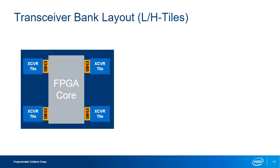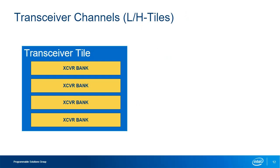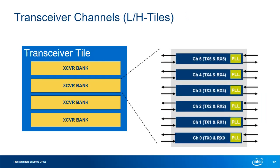Inside each L and H transceiver tile you will find transceiver banks — there are four transceiver banks in each tile. Within each bank you will find six full-duplex transceiver channels. Being in a bank means certain transceiver resources are shared between channels, particularly clocking resources. Every channel contains a PLL which can provide clocks for that channel and possibly surrounding channels, with additional PLLs outside the channel available for even greater performance and flexibility. All channels support bonded or multi-channel operation and non-bonded or single individual channel operation. In bonded modes, device resources minimize skew between channels; in non-bonded operation, each channel operates individually with no skew management resources enabled.